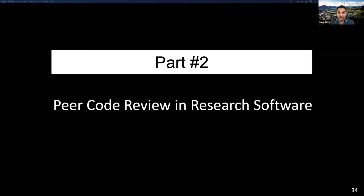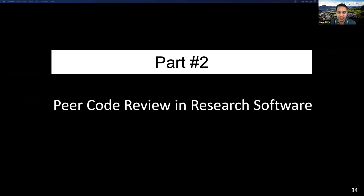If we look at papers published three or five years ago, people mentioned they don't feel the necessity. Nowadays things are getting better and people are more into adopting software engineering concepts — especially testing, code review, and other software quality practices in research software. Also the BSSW initiative and research software engineering groups are helping with improvement of software engineering practices in research software.